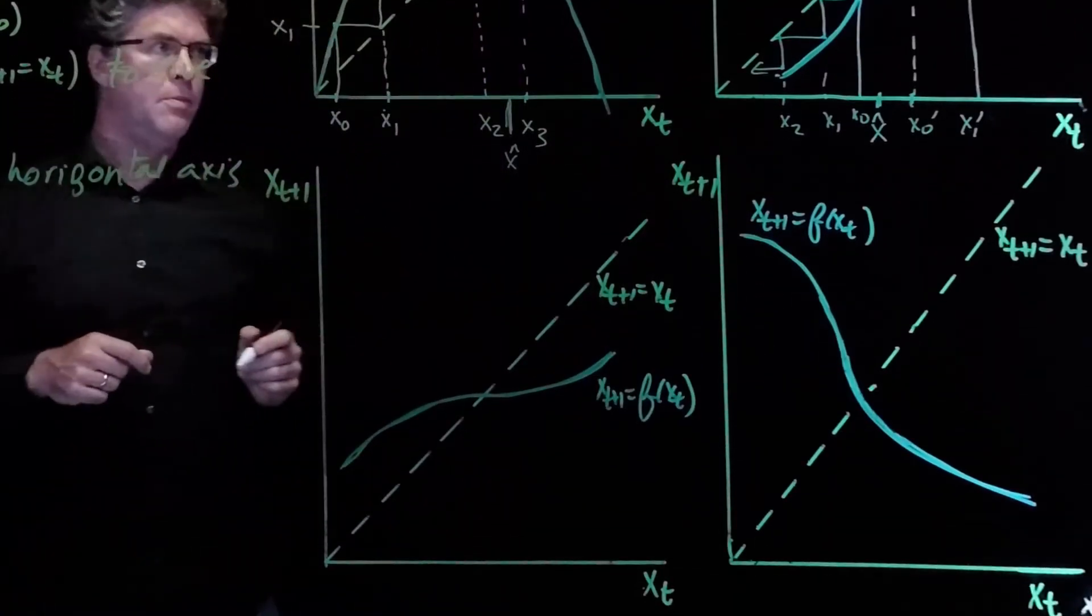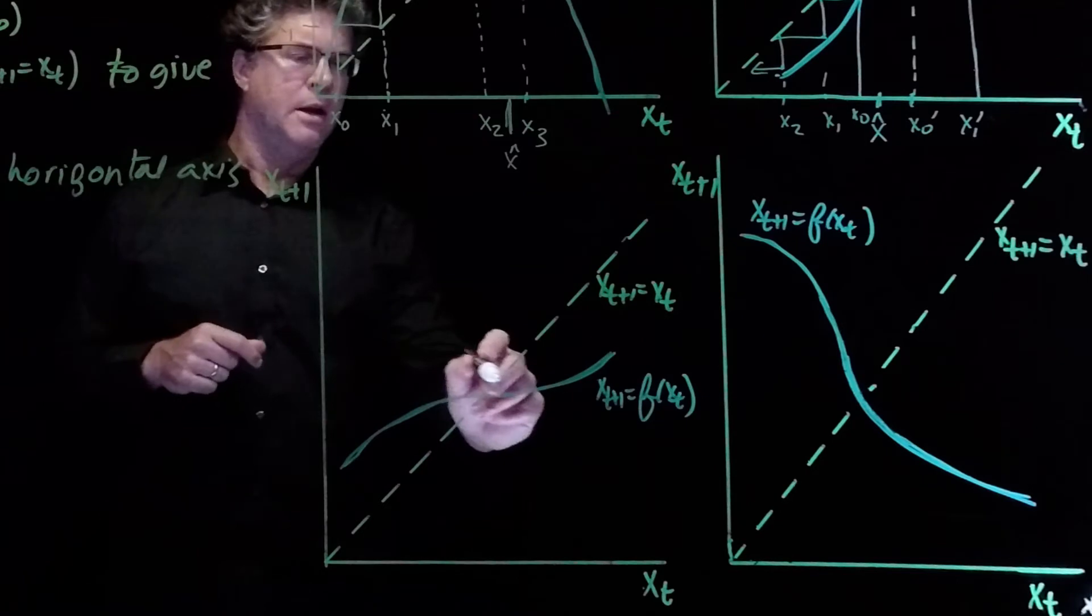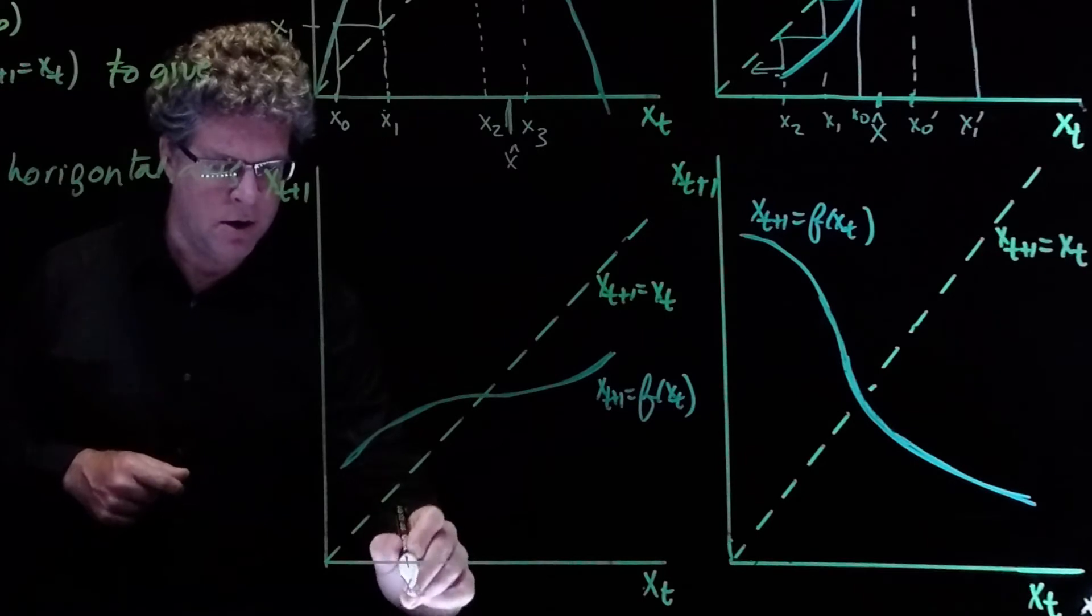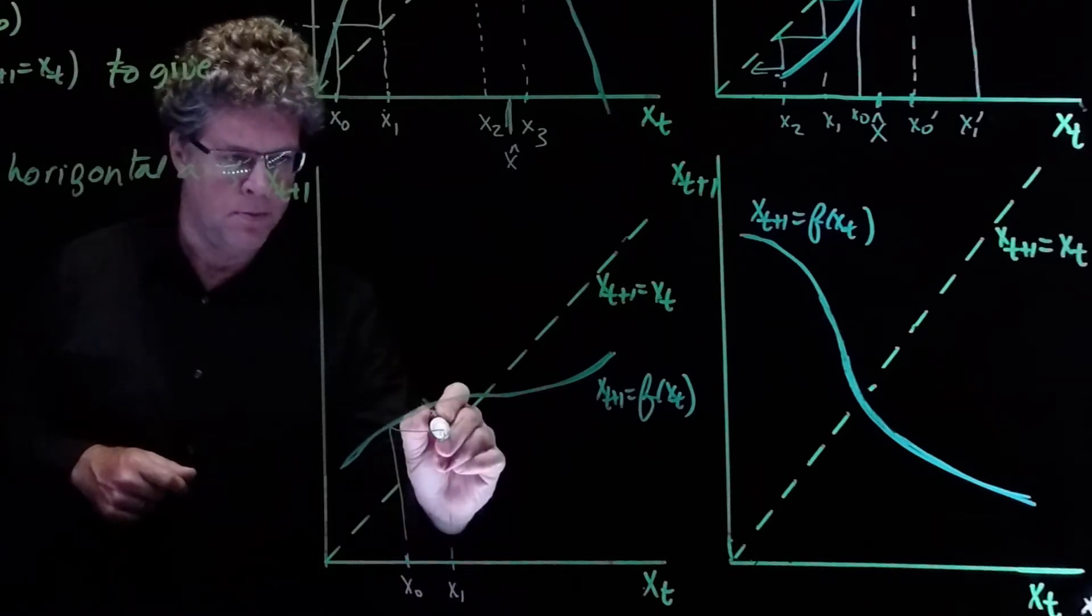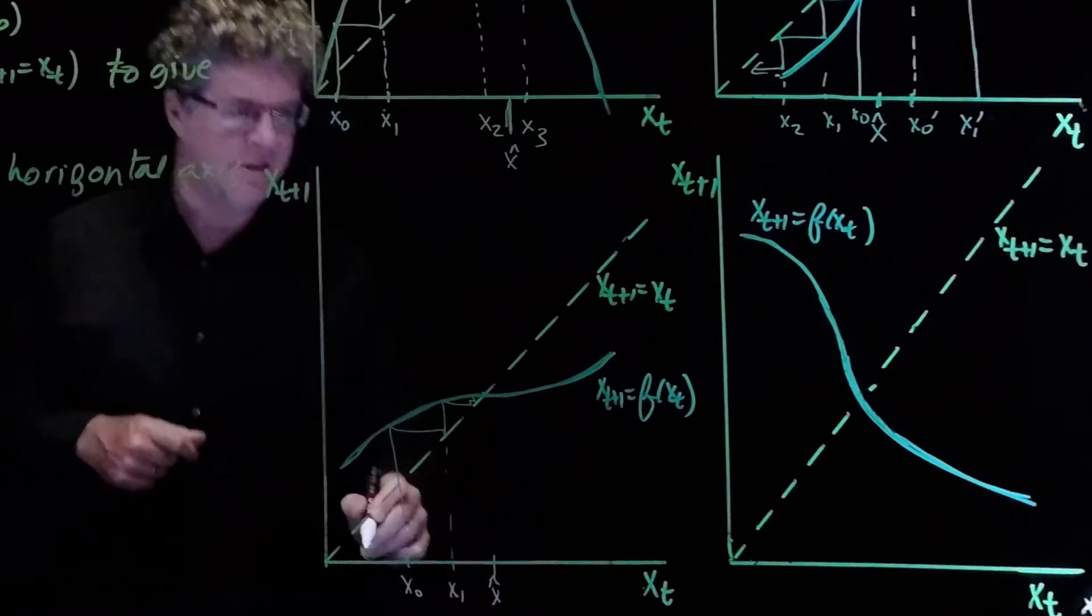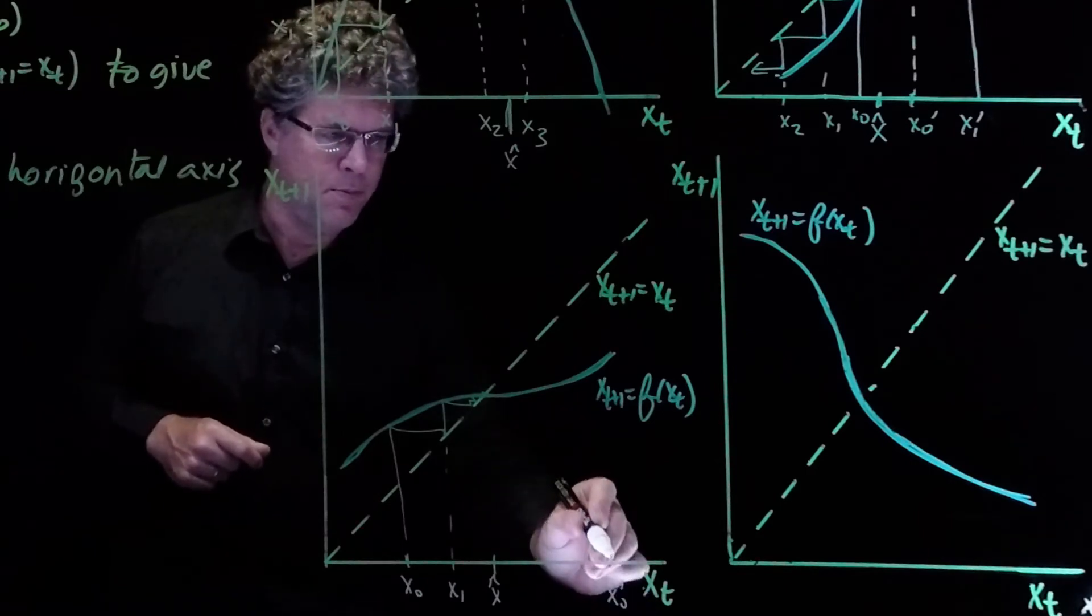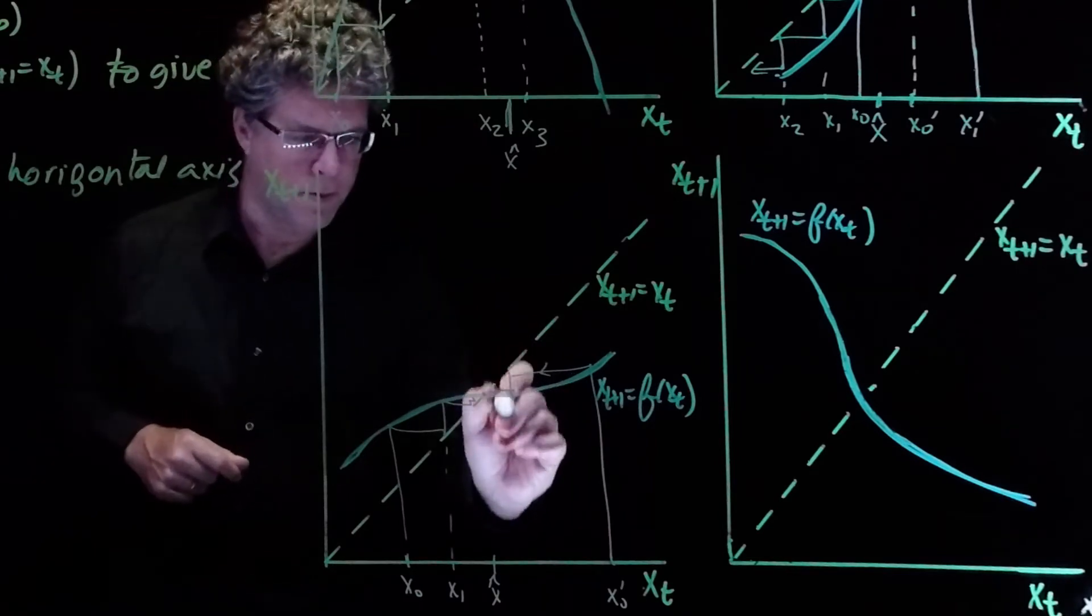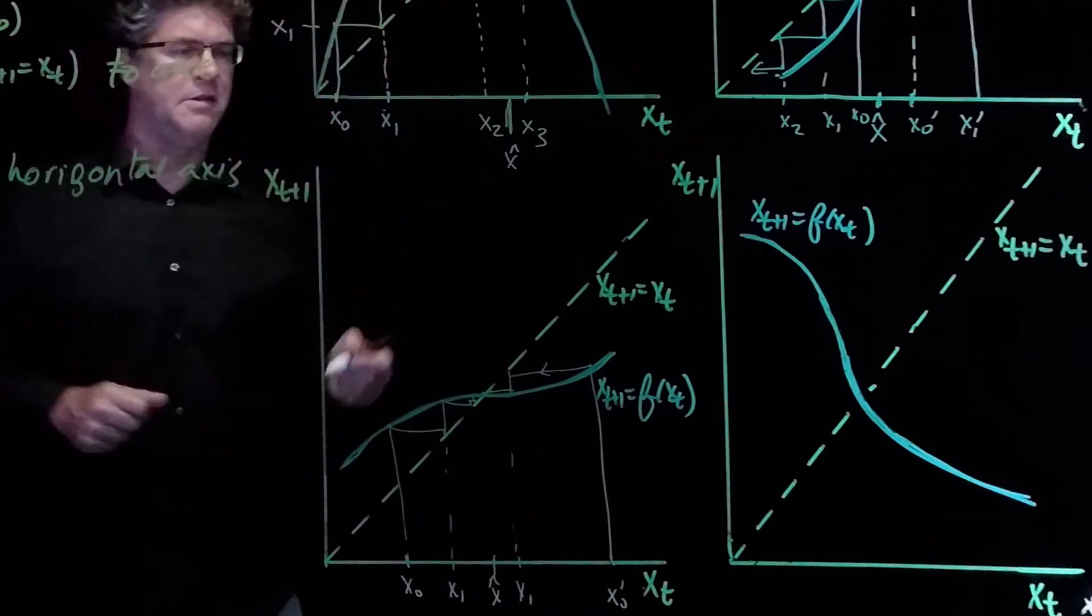Let's try a couple more. So this function now starts above the 45 degree line, and then it goes below the 45 degree line. And so if we start on the left-hand side here with x_0, then we see we're going to move towards the equilibrium point, x hat. And if we start on the right-hand side, say with x_0 prime, we're going to be moving towards, and so this is stable.